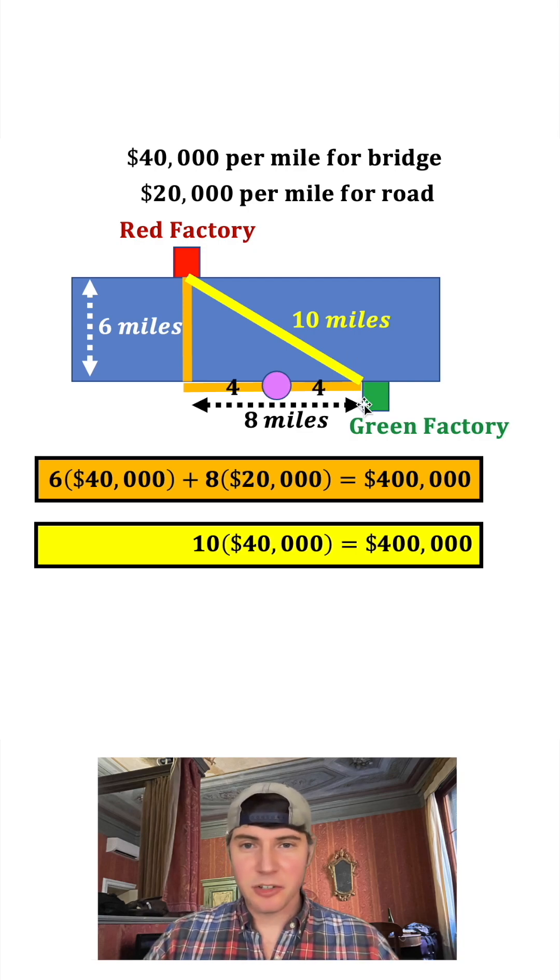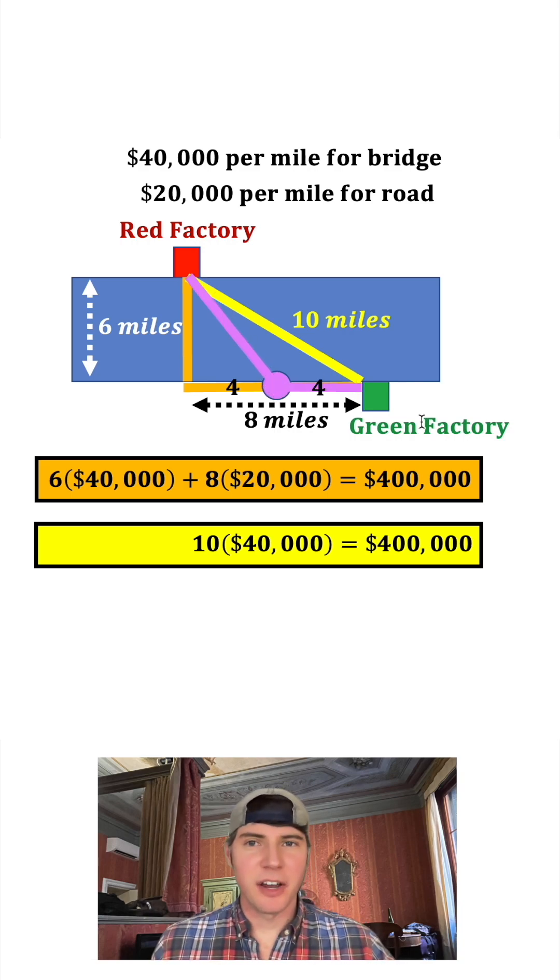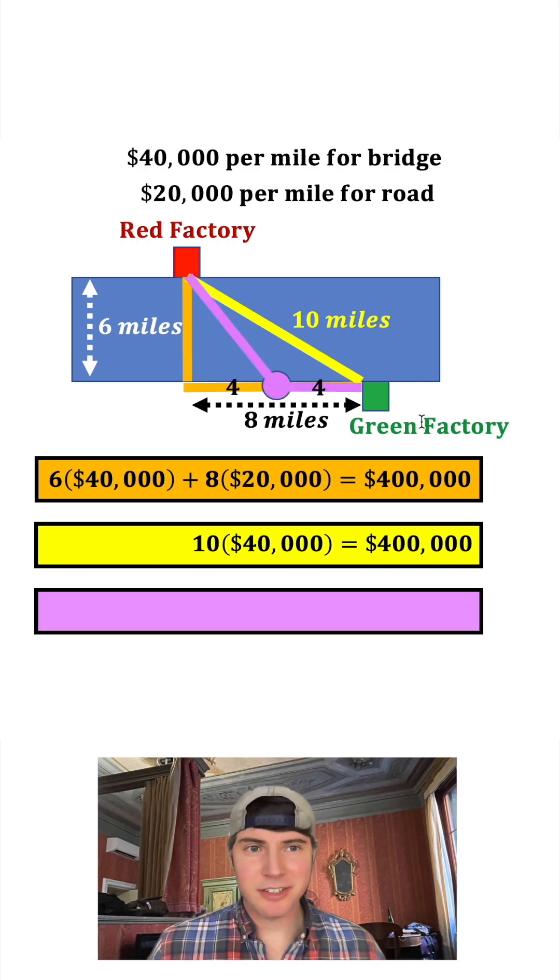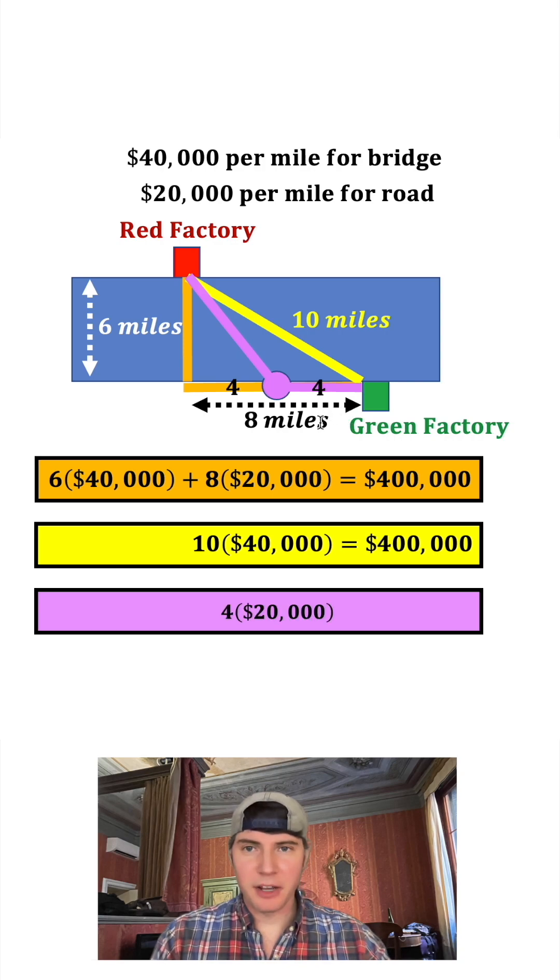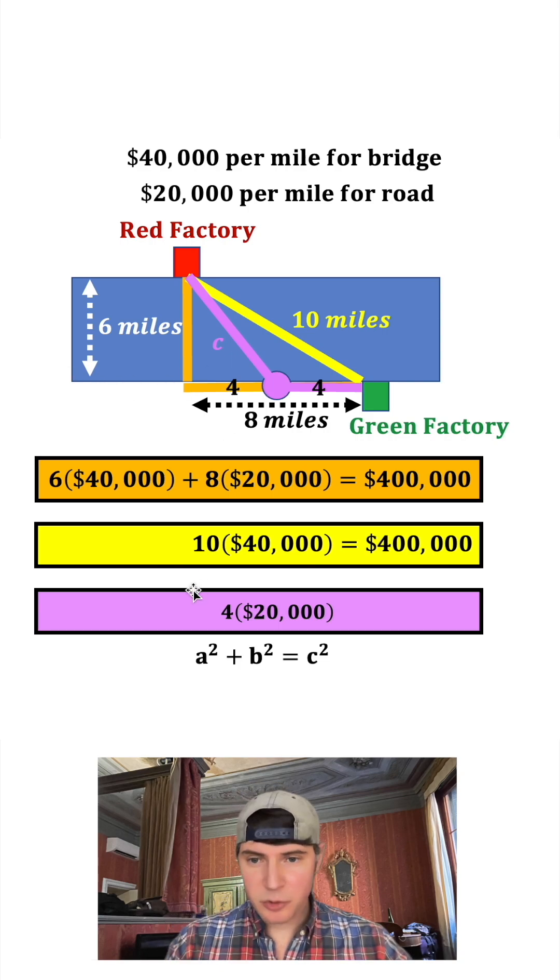I'm going to choose the point exactly in the middle so it's four miles on either side. The road part's easy, it's just four miles times $20,000. The bridge is trickier. Let's do another Pythagorean theorem, so a² will be 4² and b² will be 6², equal to c². Four squared is 16, six squared is 36.